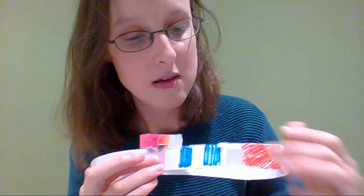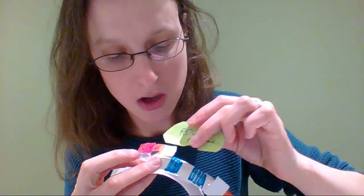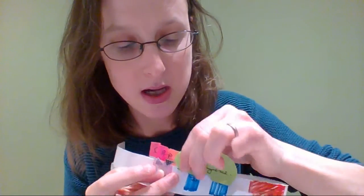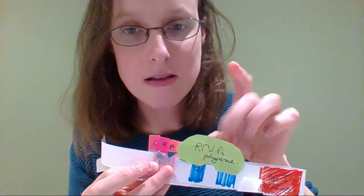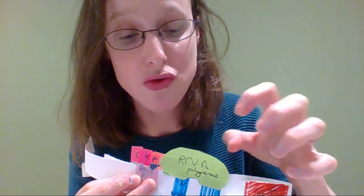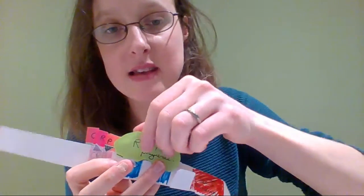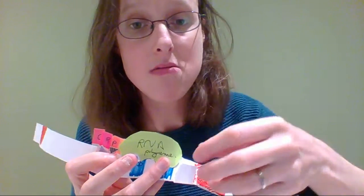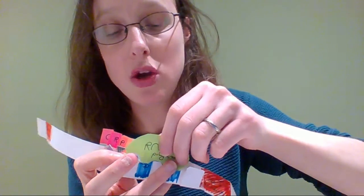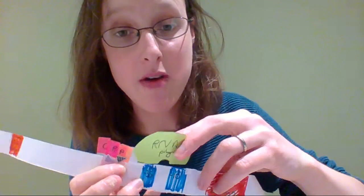So RNA polymerase comes along, binds. Because CRP is next to it, it's helped it bind really tight. So then what happens is this can then unwind the DNA and start making a new copy of the RNA.